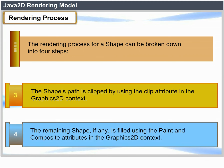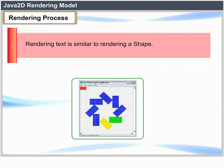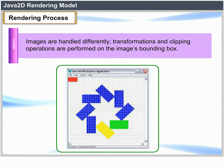The shape's path is clipped using the clip attribute in the Graphics2D context. The remaining shape, if any, is filled using the paint and composite attributes in the Graphics2D context. Rendering text is similar to rendering a shape. Images are handled differently — transformations and clipping operations are performed on the image bounding box.